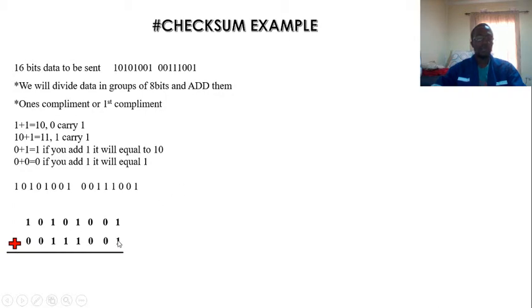1 plus 1, that is 10. 0, carry 1. 0 plus 0, that is 0, plus that 1, which is 1. 0 plus 0, 0, there's no carry. 1 plus 1, that is 10, 0 carry 1. 0 plus 1, that is 10. 0 carry 1. 1 plus 1, that is 10, plus the carry 1, which is my 11. 1 carry 1. 0 plus 0, that is 0, plus that carry 1, we have 1, and then 1 plus 0, equal to 1.